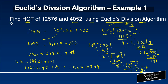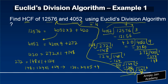Finally, I divide 24 by 4. Four goes six times into 24, and the remainder is zero. The remainder is zero, so the process ends. The number that last divided evenly is 4, so the HCF of 12576 and 4052 is 4. Quite a long process, but we have reached the result — that's how you find the HCF of two positive integers using Euclid's division algorithm.